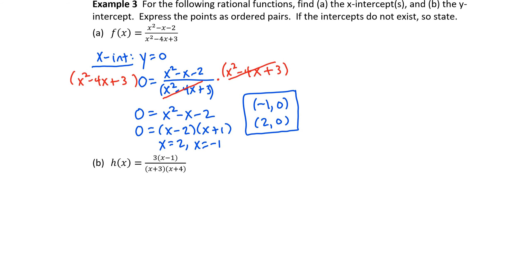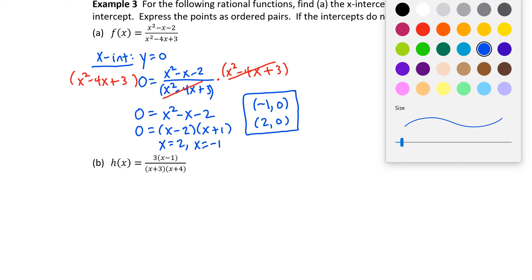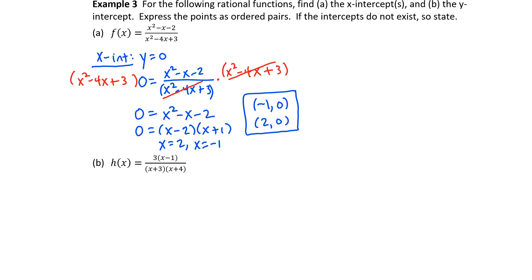To find the y intercept, on the other hand, we're going to set x equal to 0. So we're always setting the opposite variable equal to 0. That concept hasn't changed, and it doesn't change no matter what type of function that you're looking at. I'm going to rewrite the f of x as y, and then I'm going to replace all the x's with 0s. Notice we end up with, in this case, negative 2 thirds.